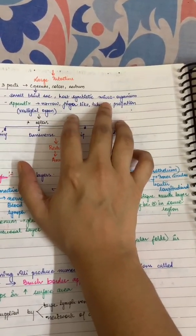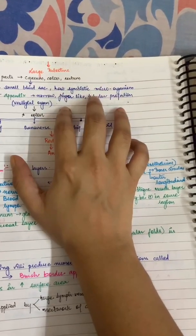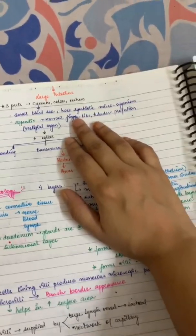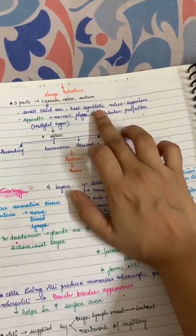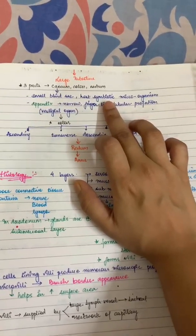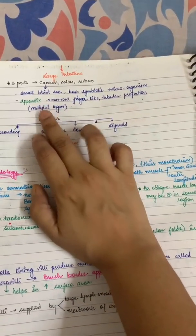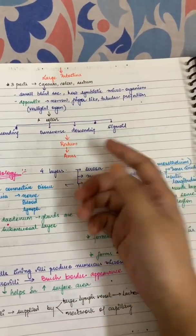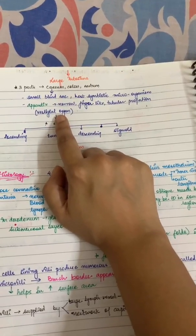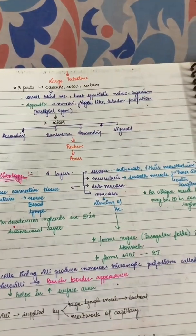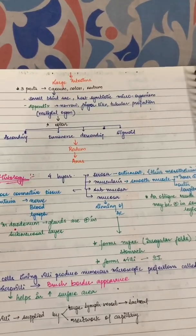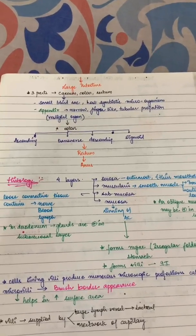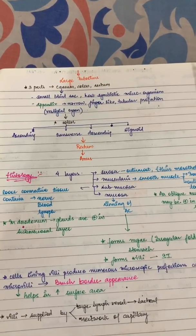The large intestine contains symbiotic micro-organisms which help in digestion of food and don't cause any pathology. However, if we take excess antibiotics, these symbiotic bacteria die. There is also an appendix, also called the vermiform appendix because it looks like a worm — it is a vestigial organ. It had a role in cellulose digestion in ancient times but now is a narrow, finger-like tubular projection with no function.